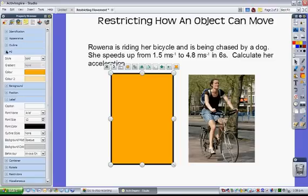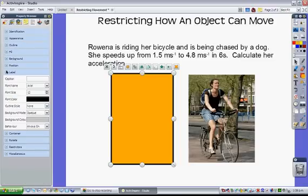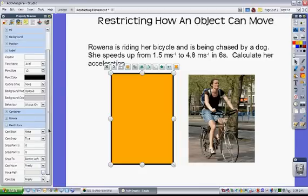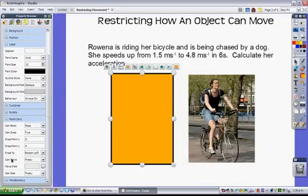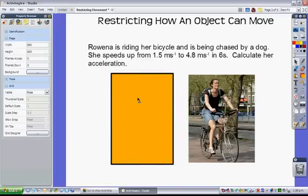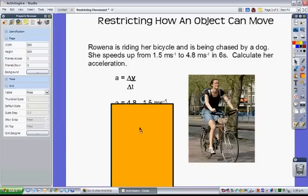And I'm going to find the Restrictor menu, which is down near the bottom. And then I'll move down this to Can Move. And instead of Can Move freely, I want this box only to move vertically. So I just select that. Now that box will only move up and down.